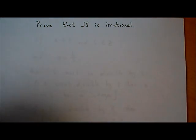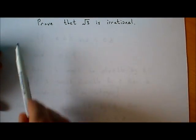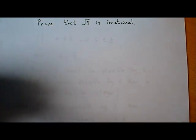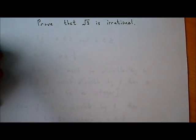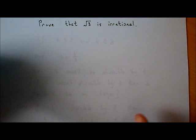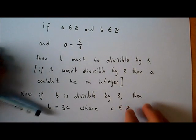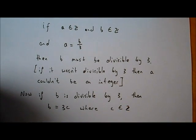We're going to try and prove that the square root of 3 is an irrational number. We've already proven that the square root of 2 is irrational. Now we're going to prove that the square root of 3 is irrational. It's a tricky proof, so you might not get it the first time. We're going to look at one idea that we'll use in the proof before we actually get into the proof.